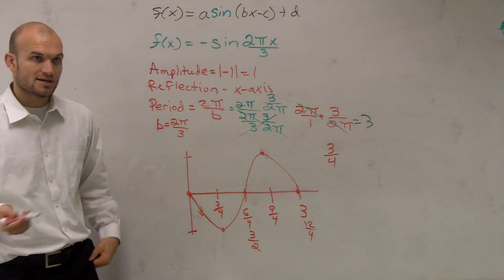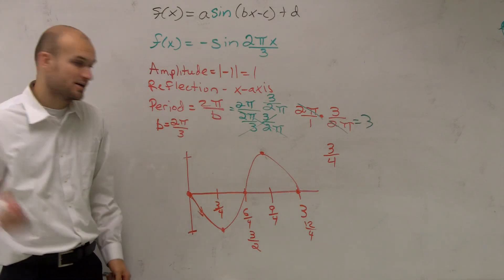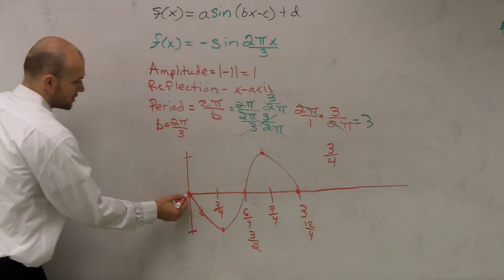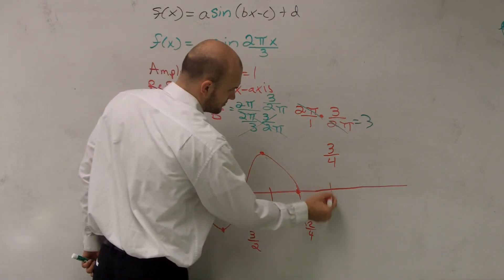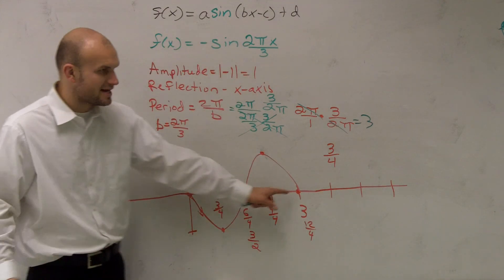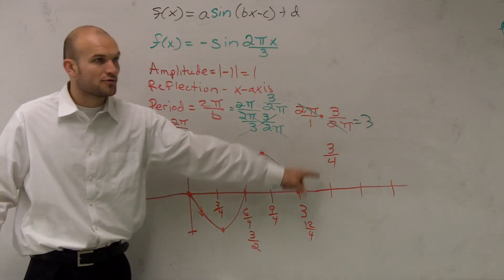But remember, we also need to do two periods, right? So it can go in either direction. It doesn't really matter. But guys, to keep on doing the periods, it's not anything harder. Just keep on adding 3 over 4.